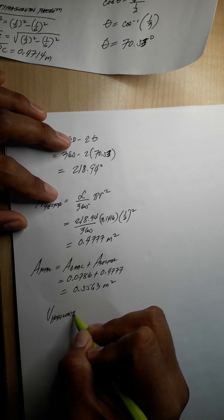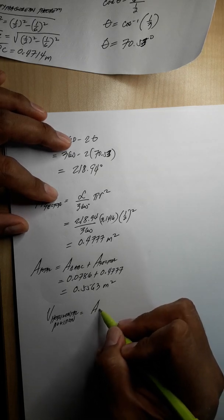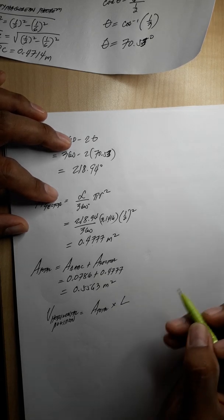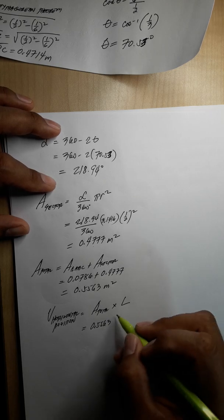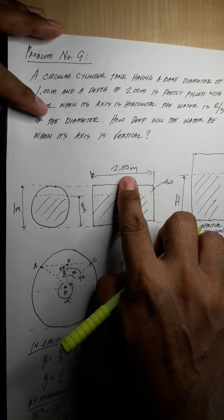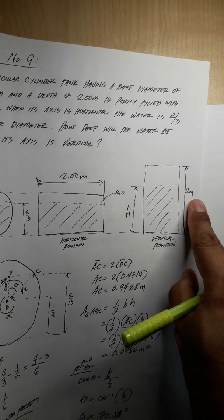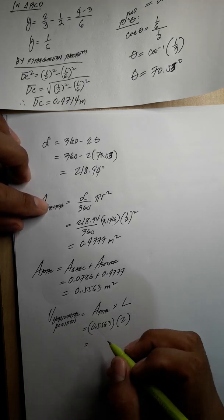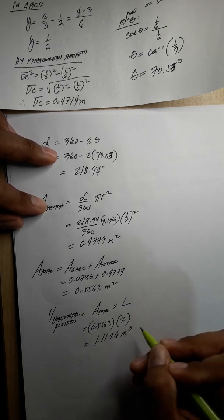The volume of water in horizontal position equals the area of the section times the length or depth of the cylinder. So volume equals 0.5563 times 2 meters, giving the volume of water inside the cylinder in horizontal position equal to 1.1126 cubic meters.